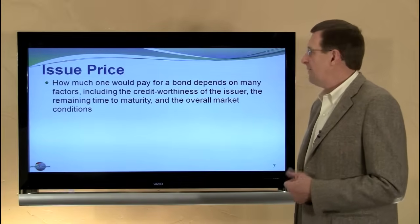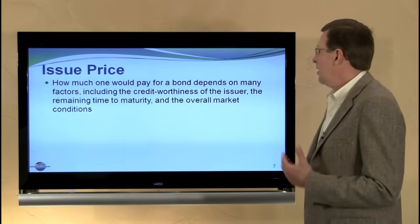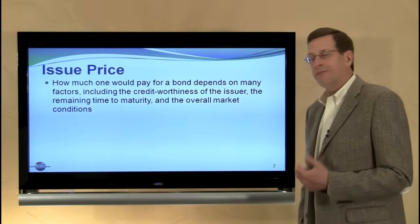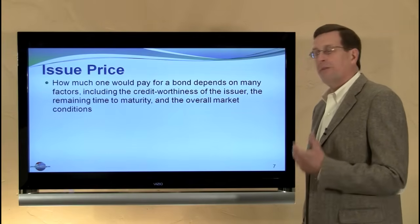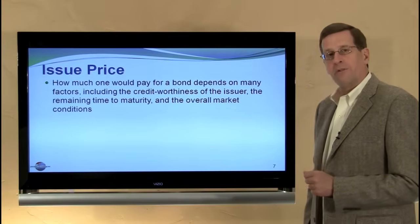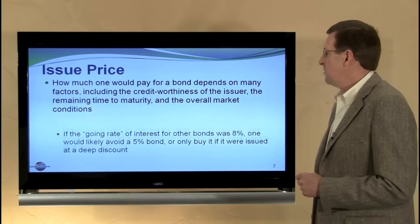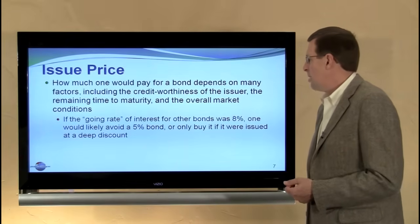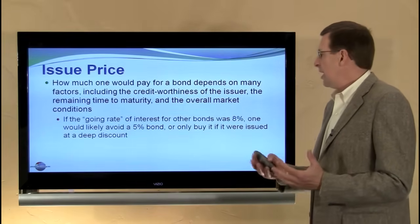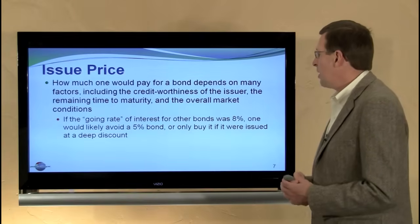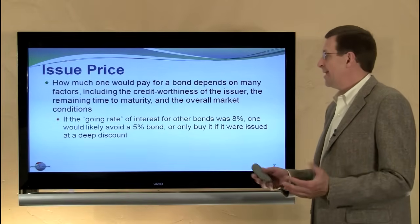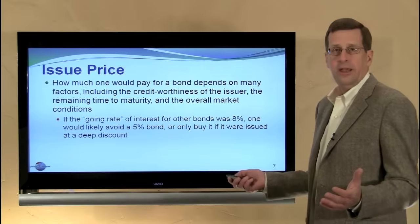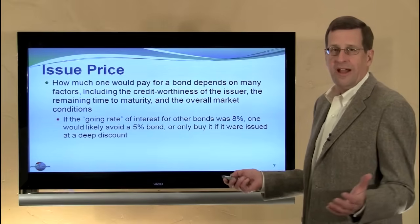How much would one pay for a bond? What would be the issue price? It really depends on many factors, including the credit worthiness of the issuer, the remaining time to maturity, and the overall market conditions for bonds at the time they're issued. We can think about a going rate or market rate of interest for bonds. Let's assume the going rate or market rate was 8% at the time that a company attempted to issue a 5% bond.